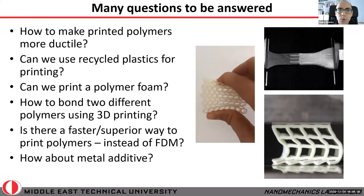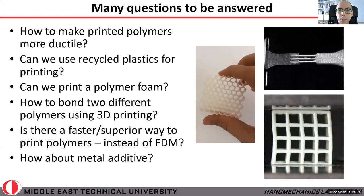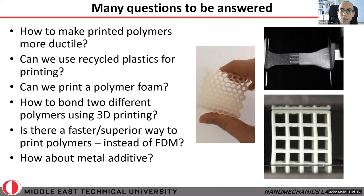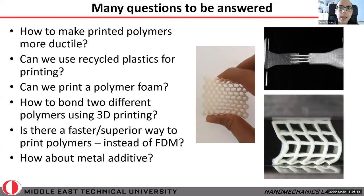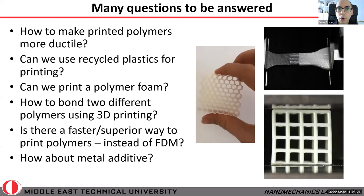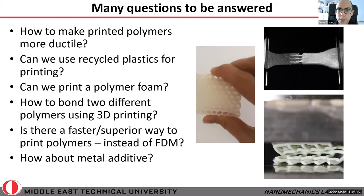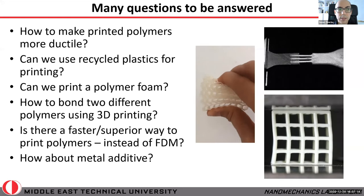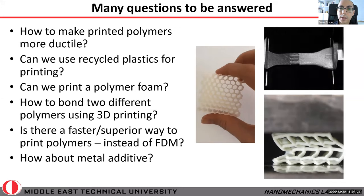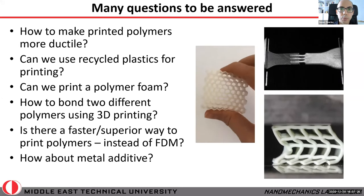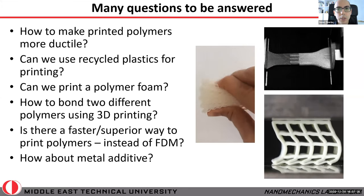The questions I'll address include: how to make printed polymers more ductile, since many polymers are too brittle for certain applications; can we use recycled plastics for printing, given that plastic waste is a huge global problem; can we print a polymer foam instead of a solid part; how to bond two different polymers using 3D printing; and towards the end, another additive manufacturing process that produces parts faster and more reliably, plus some metal additive work.